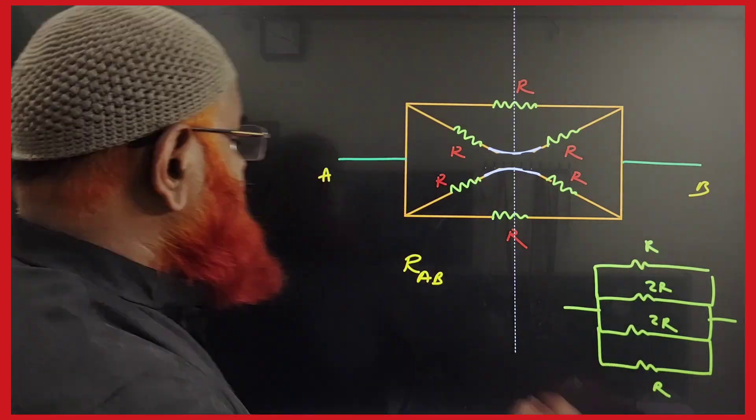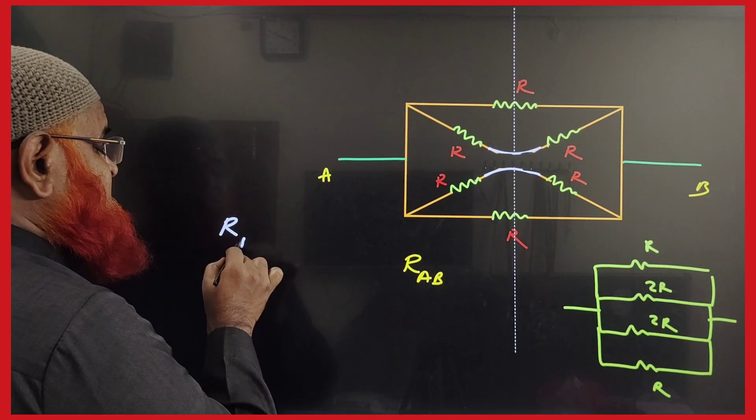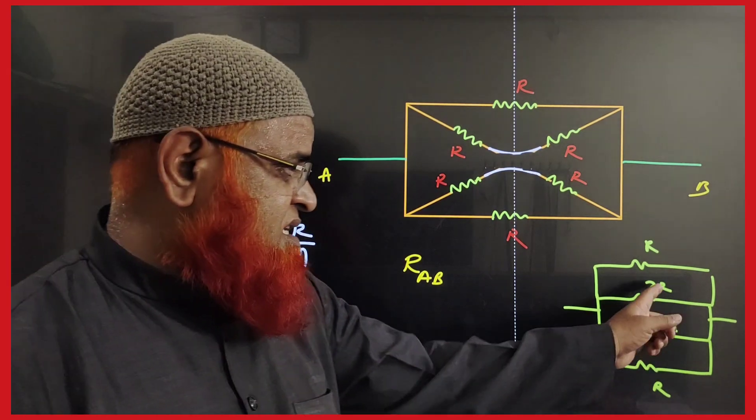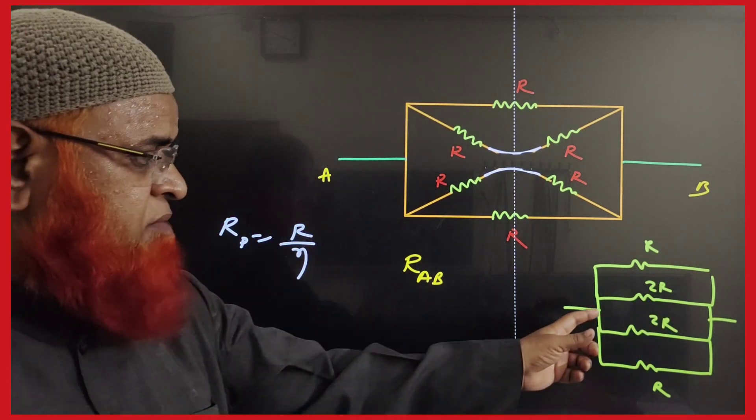So 2R, R, R. In parallel connections, when the resistances are the same, the shortcut formula is R by N. What does this mean? When two resistors are the same and parallel, the answer will be R by N.